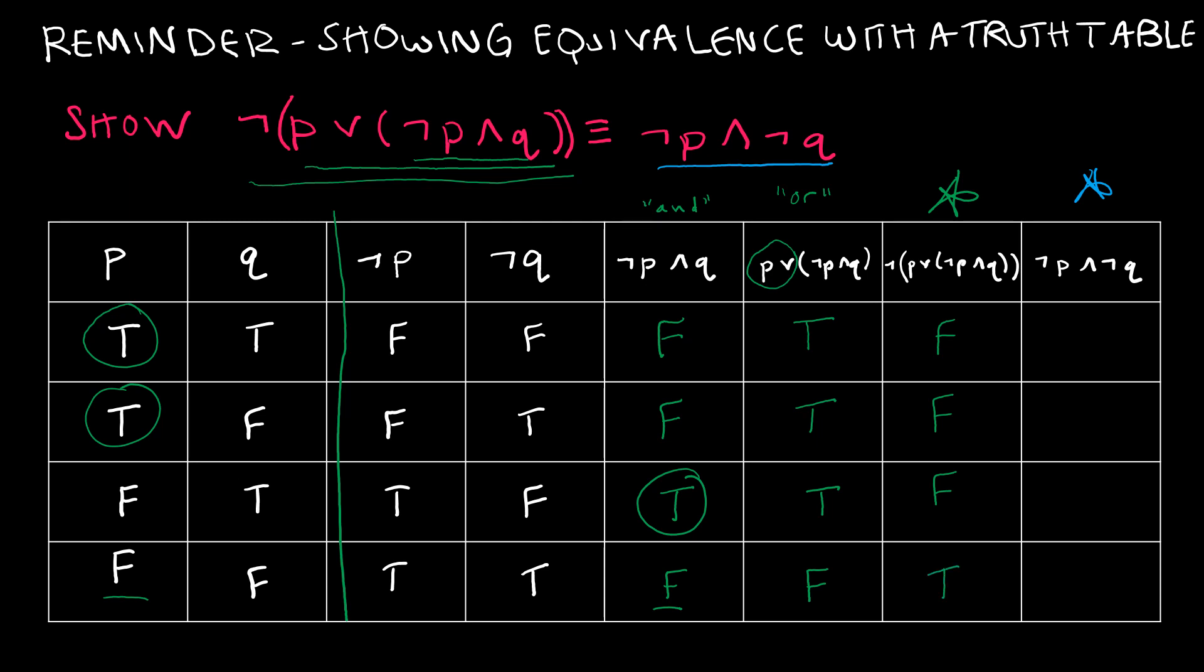Then my next column is just the negation of that so that's false false false true. So that's what I'm hoping my blue column will match up to.